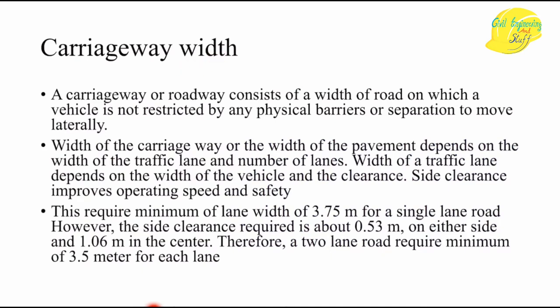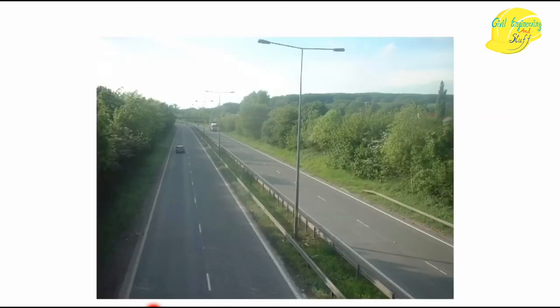The next element is carriageway width. The carriageway is the roadway available for vehicle movement — defined as the width of road on which a vehicle is not restricted by any physical barrier to move laterally. In short, it is the width of the road available for vehicle movement, and that portion is called the carriageway.